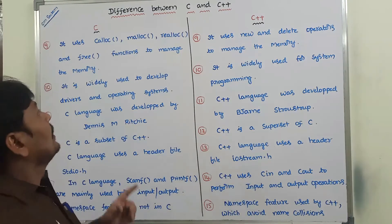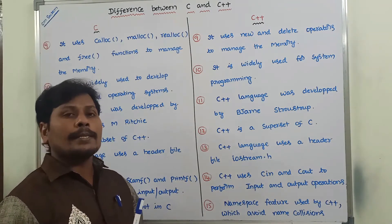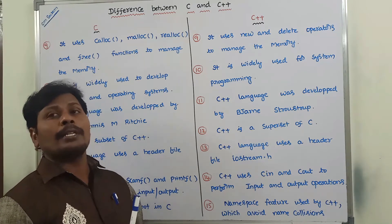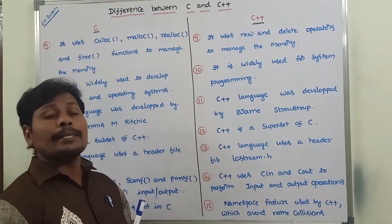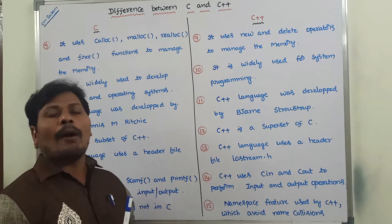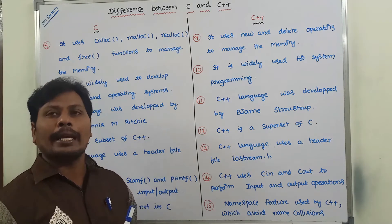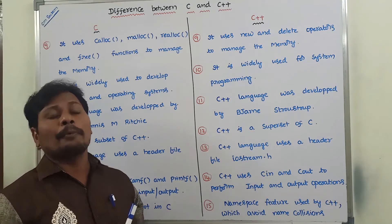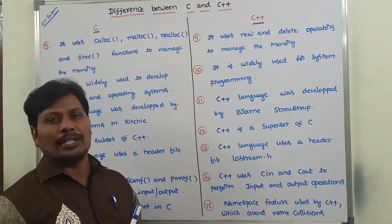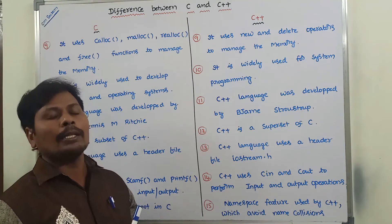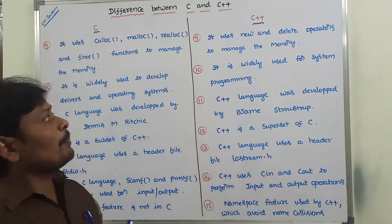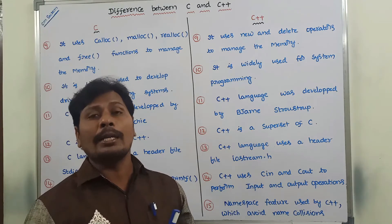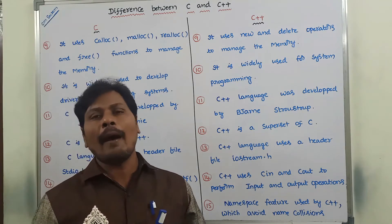C language uses malloc, calloc, realloc, and free functions to manage memory. These are called dynamic memory allocation functions — used to allocate memory at runtime. Whereas in the case of C++, it uses new and delete operators to manage memory.